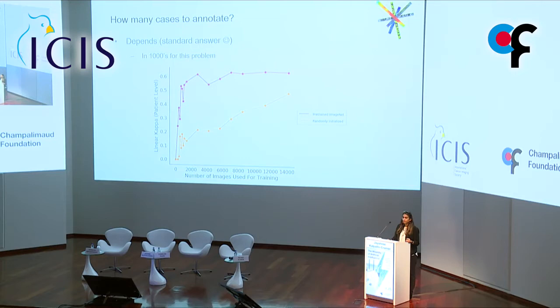The next question typically asked is: how many cases do I need? The answer is always 'it depends.' For the breast density task, performance starts to level off at around six to ten thousand images. However, if you don't use pre-trained networks — networks generated for natural scene images like ImageNet — you need many more cases. If you're training from scratch, even at fifteen thousand images you may not reach the performance you need. Using pre-trained networks lets you get away with far fewer cases.